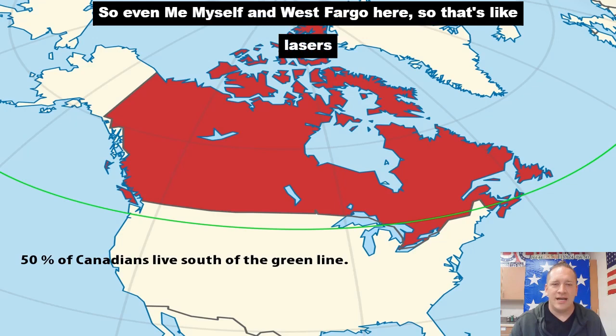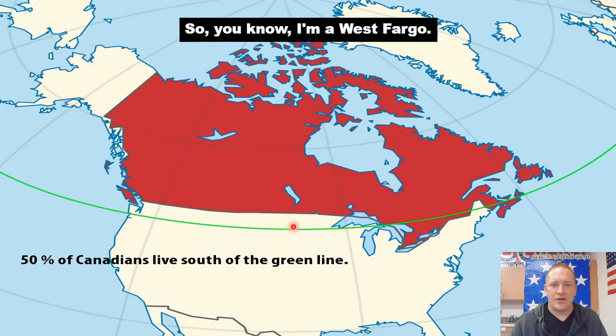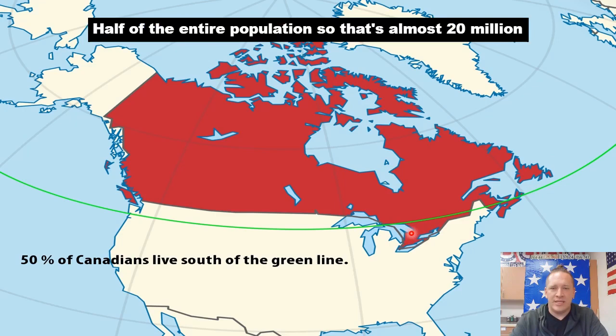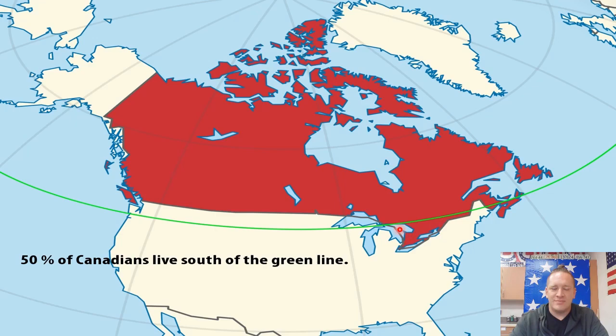Here's a pretty interesting map that might surprise some of you: 50% of Canadians live south of the Green Line. Even here in West Fargo, we are north of the Green Line. So half of all Canadians — almost 20 million people — live in this area south of it.